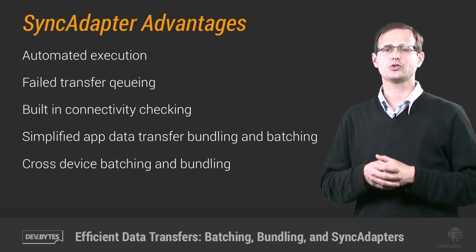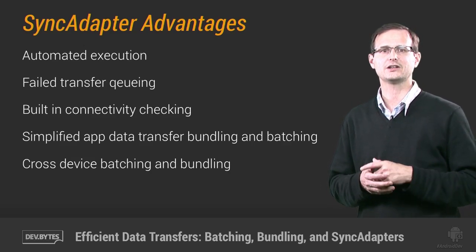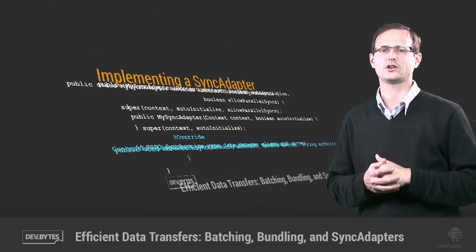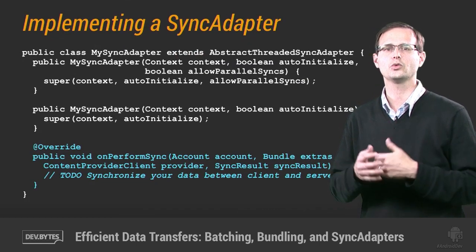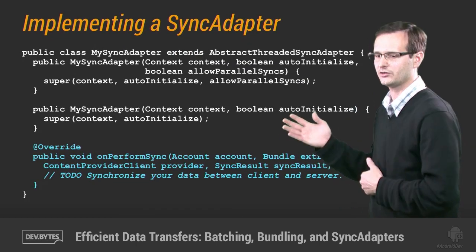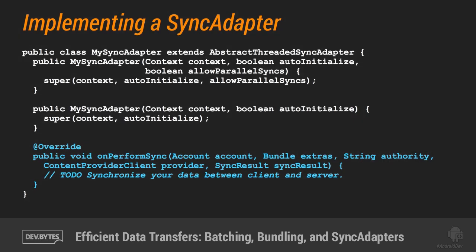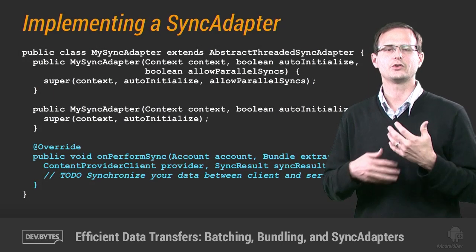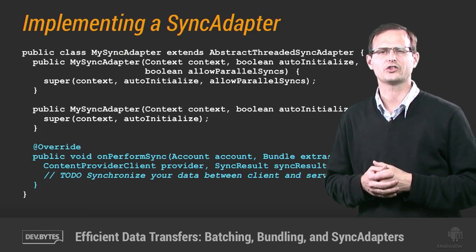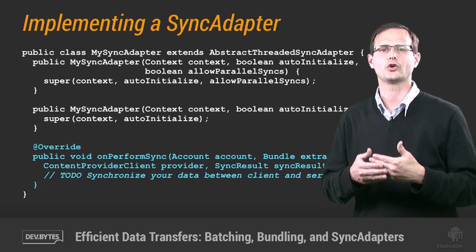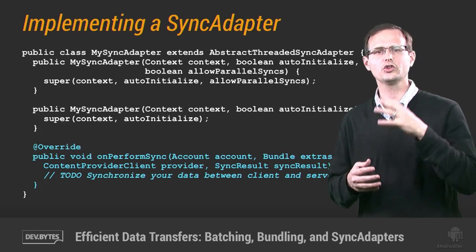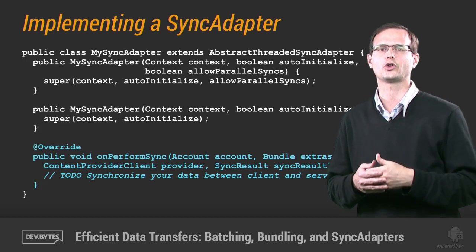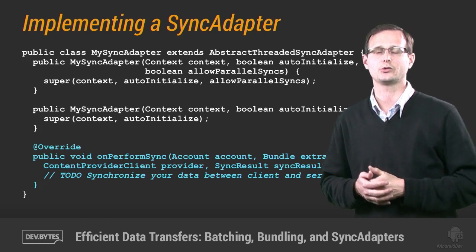Creating a sync adapter is actually pretty straightforward. Start by extending the AbstractThreadedSyncAdapter class and implementing your own data transfer code within the onPerformSync handler, as you can see here. When executing the sync adapter, it will spawn a thread to invoke sync operations, so you don't need to worry about moving your code into a background thread. Similarly, multiple executions will be rejected, so you can write your transfer code knowing that it won't be run concurrently with itself.